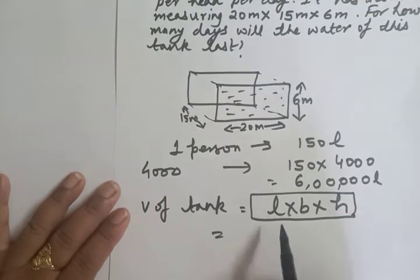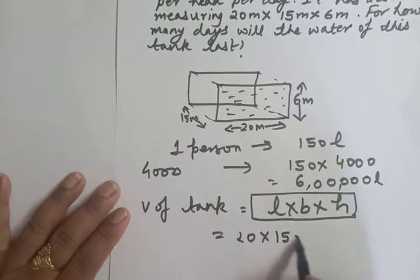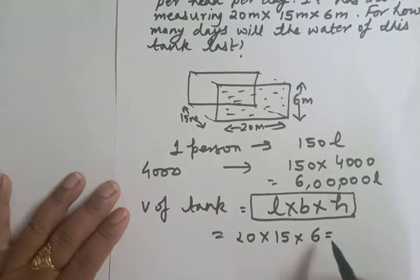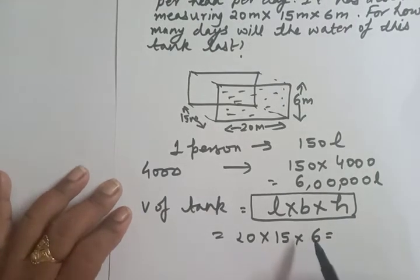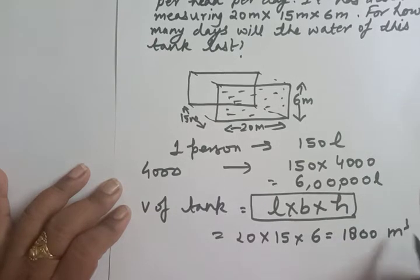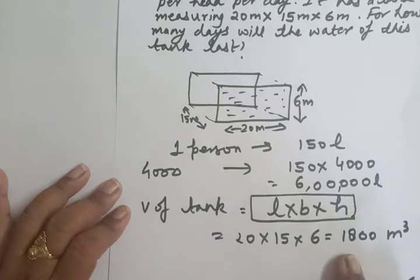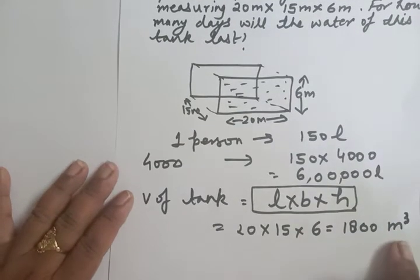Putting in the values: 20 × 15 × 6. After multiplying, we get 1800. So the capacity of the tank is 1800 cubic meters.